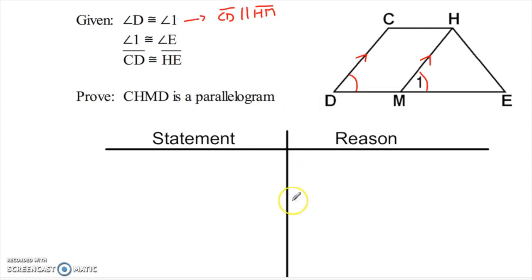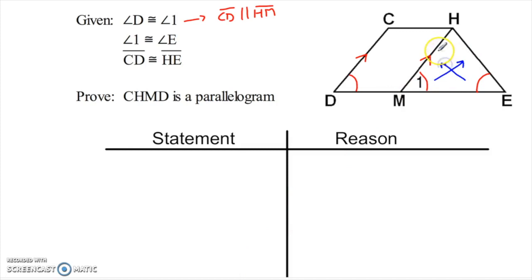So I'm sort of halfway to proving that shape is a parallelogram already. They also tell me that angle 1 is congruent to angle E. Right away I stop again because I notice they just gave me two angles of a triangle that are congruent. If I have a triangle with two congruent angles, then the sides opposite those angles are also congruent — in other words, MH is congruent to HE. I'm going to draw a little arrow to mark that.